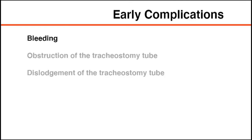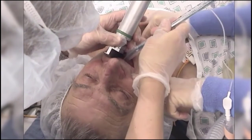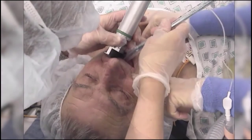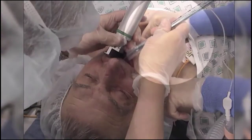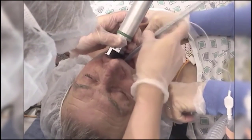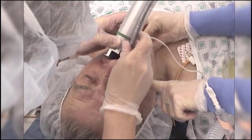Early complications after tracheostomy placement include bleeding, obstruction, and dislodgement of the tracheostomy tube. Bleeding is the most common complication, but is usually self-limited or can be controlled with measures such as application of pressure. If obstruction of the tracheostomy cannot be cleared with standard suctioning techniques, or if the tube becomes dislodged, the airway should be secured through oral tracheal intubation instead of attempting to insert a new tracheostomy tube through a tract that is not yet fully matured.